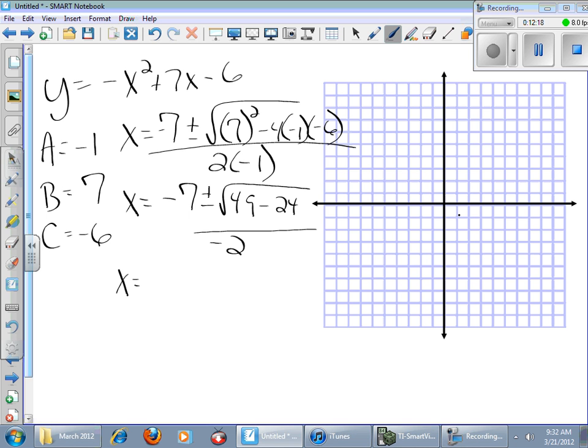X is going to equal negative 7 plus or minus 5 divided by negative 2. My two zeros are going to occur at negative 7 plus 5 is negative 2 divided by negative 2 is 1. So that's one of my zeros. I'm also going to get negative 7 minus 5 is negative 12 divided by negative 2 is positive 6. So that's going to be at 6, 0.